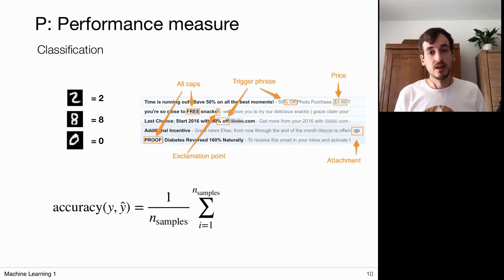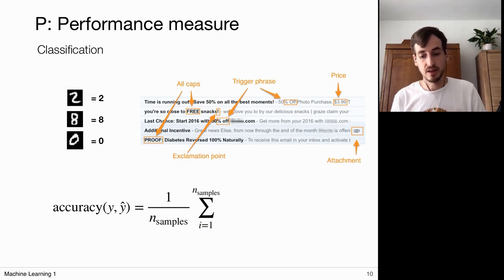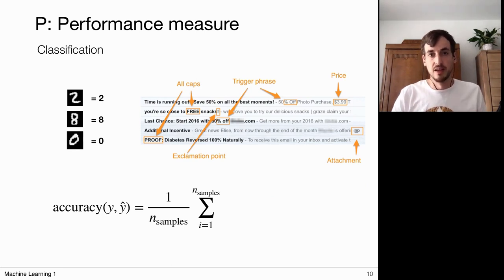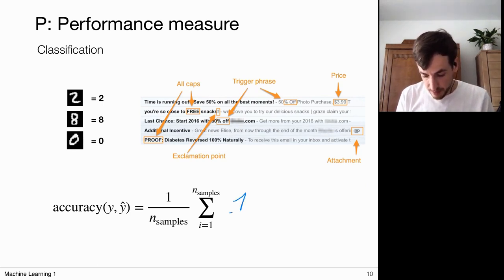Now let's come to performance measures. We have a task and experience to improve this task, but we need a way of measuring if we are actually improving at performing this task. For classification, a relatively straightforward thing is to simply count the amount of times that you were actually correct in making your prediction. We can write this mathematically as the average over an indicator function which checks when my prediction ŷᵢ coincides with my label yᵢ.